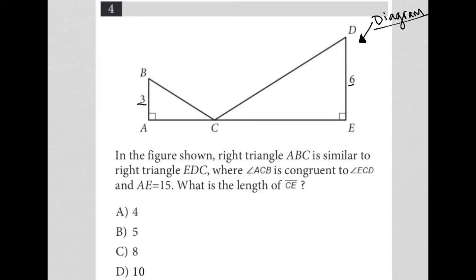The question says, in the figure shown, right triangle ABC is similar to right triangle EDC, and that tells me that this angle here is the same as this one here, and this angle here is the same as this one here. We already know the right angles are the same for both, but that also tells me that their corresponding sides are proportional. So I was correct in thinking that this triangle here is two times bigger than this triangle here.